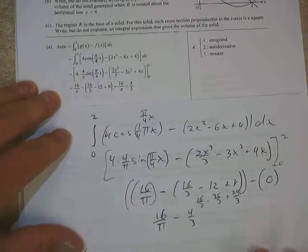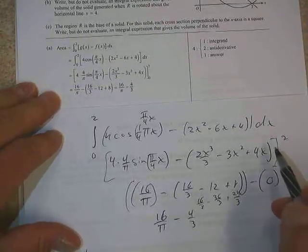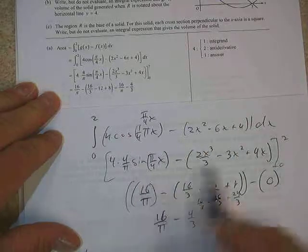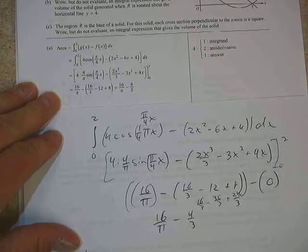Okay, any questions on part A then? Again, we're writing the integral, top minus bottom. Find the antiderivatives, plug in 2 and 0, we're done.